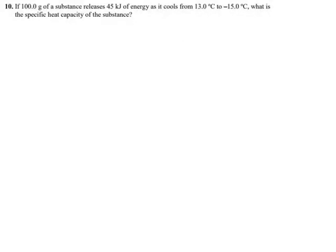100 grams of a substance releases 45 kilojoules of energy as it cools from 13°C to -15°C. What is its specific heat? Okay, temperature is changing, so our trusty formula comes out. As soon as you see degrees Celsius going up or down, this is almost our only option.